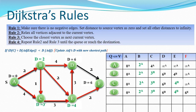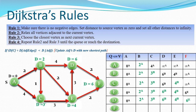We now choose the next shortest value. Two vertices hold the same value of 6, so we choose D first. From D: 6 plus 2 is 8, which is bigger than the value already held, so the condition fails and we keep the same value. We copy the remaining values as usual. Finally, F is the last vertex with distance 6, and from F there are no further adjacent vertices.